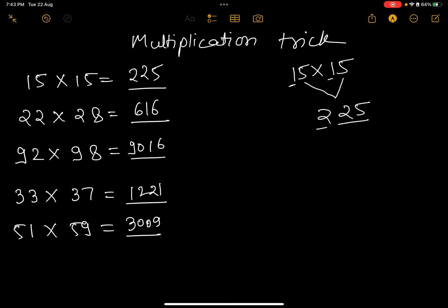Similarly for 92×98, the multiplication of 8×2 equals 16. What comes next to 9 is 10, so 10×9 equals 90, giving us 9016. Let's take another example.